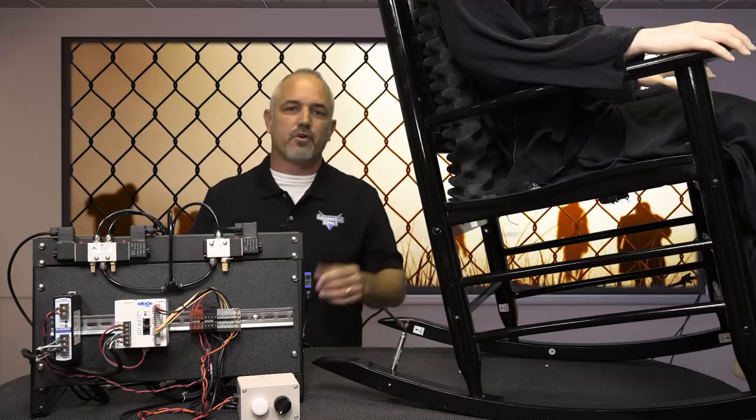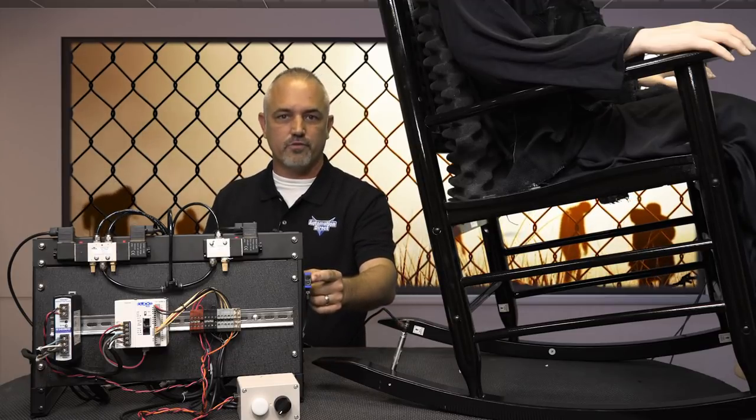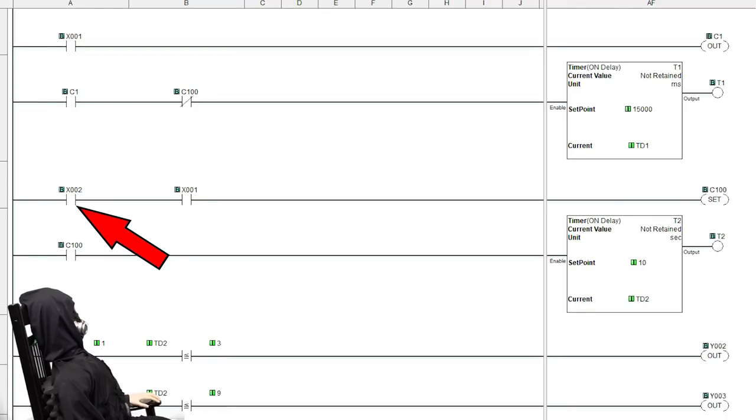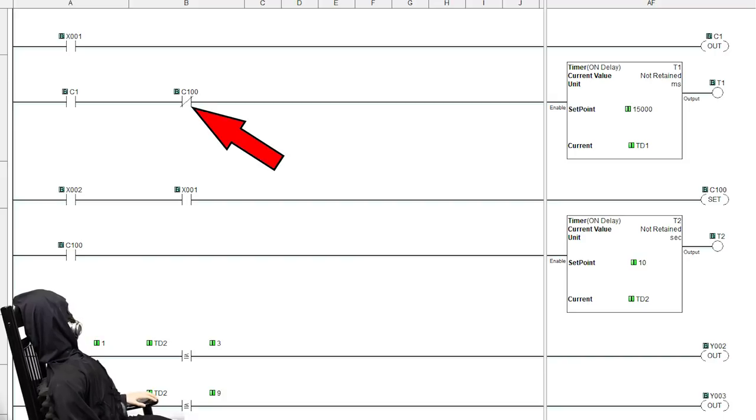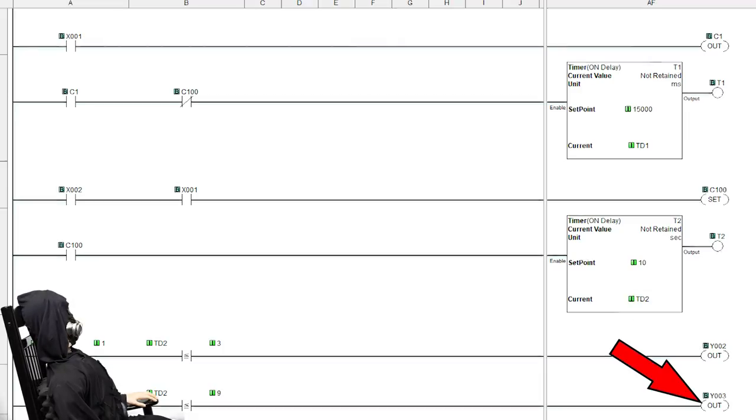Ralphie starts rocking and when a person walks by and trips the photo sensor, we program the PLC to stop the output of the rocking chair and slowly turn Ralphie's head to look in the direction of the passerby. After a few seconds, Ralphie's head turns back and the chair begins rocking again.